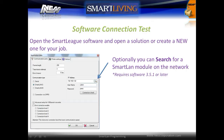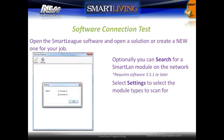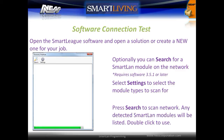Optionally, you can search for a Smart LAN module on the network — this requires software version 3.5.1 or later. In the search window, select Settings and then choose the module to search for. Press Search to scan the network; any detected Smart LAN modules will be listed. Double-click to use.